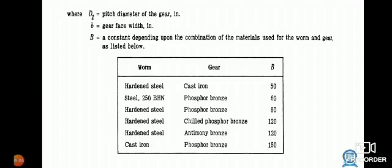Steel worm made by steel with gear made by bronze has constant value 60.